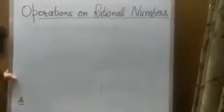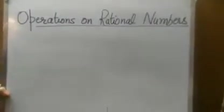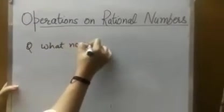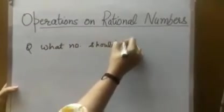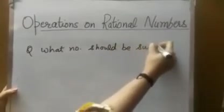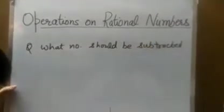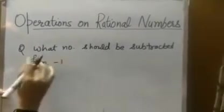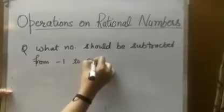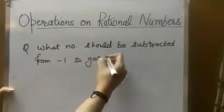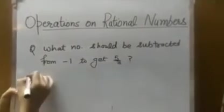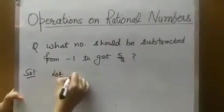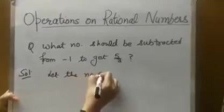Now the next question: what number should be subtracted from minus 1 to get 5 by 3? We will do it by both methods. Let the number be X.